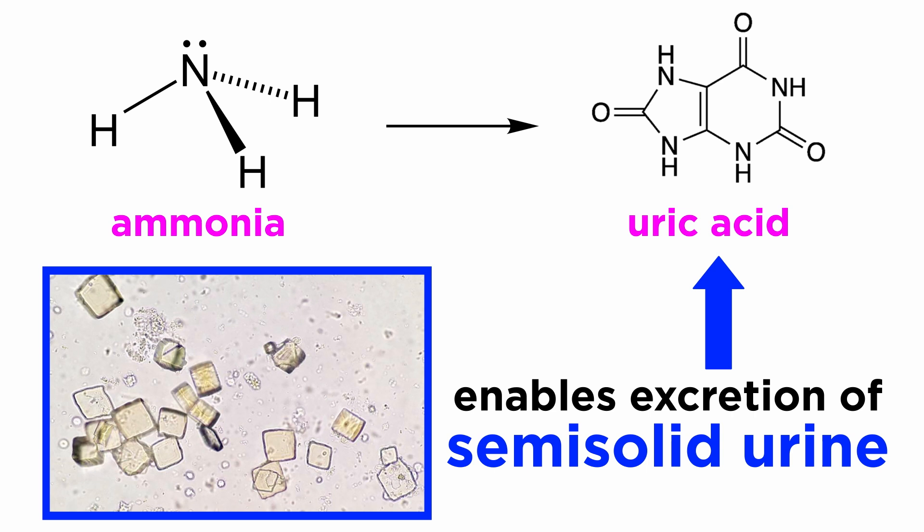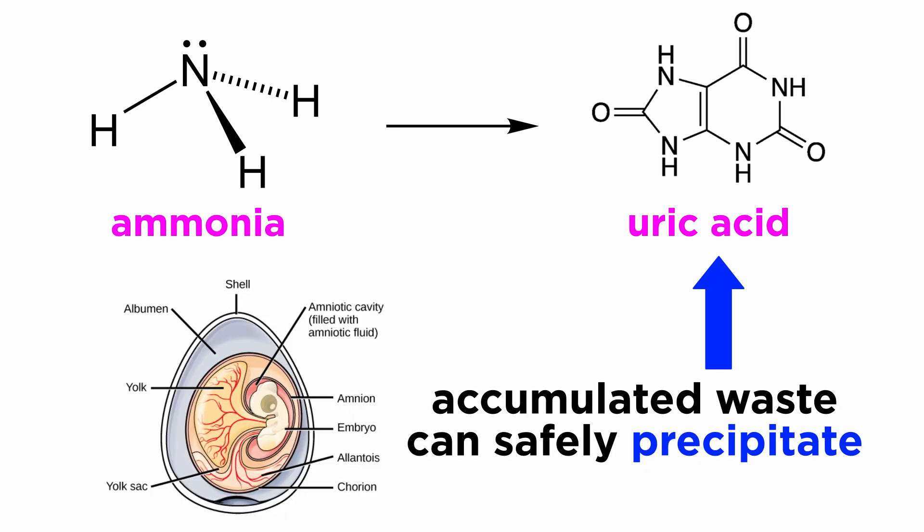The use of uric acid has another important benefit. Reptiles and birds lay amniotic eggs, enclosing their embryos, together with their stores of food and water, and wastes that accumulate during development. By converting ammonia to uric acid, a developing embryo's waste can be precipitated into solid crystals, which are stored harmlessly within the egg until hatching.